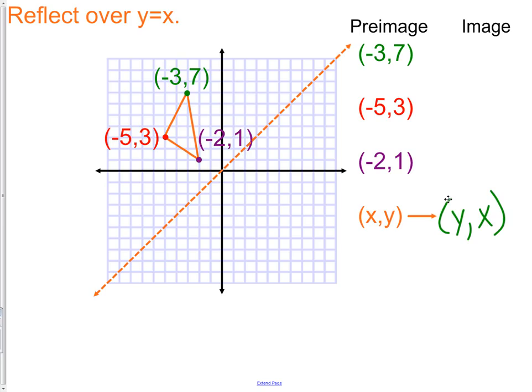So instead of being at (-3, positive 7), the image would be at (positive 7, -3). Let's look how that looks in the picture. So we took the green point at (-3, positive 7), and we go positive 7, and then -3. And there would be your point, (7, -3). If you actually took the distance formula and calculated it, the distance from the green dot to the orange line and the distance of the blue dot to the orange line would be exactly the same.